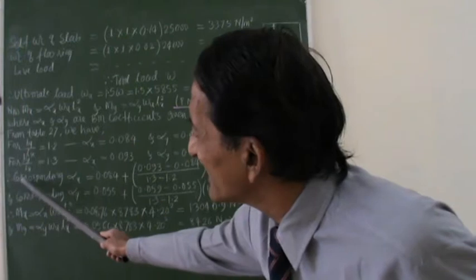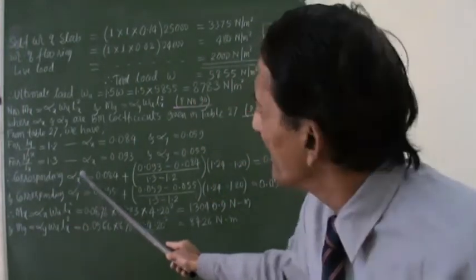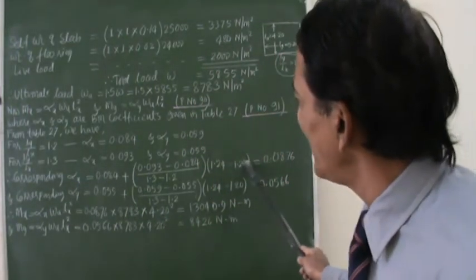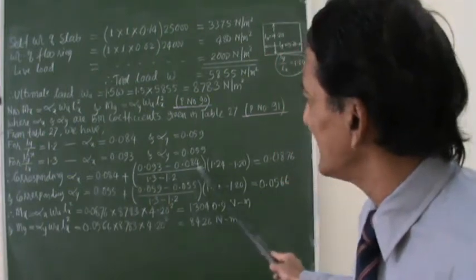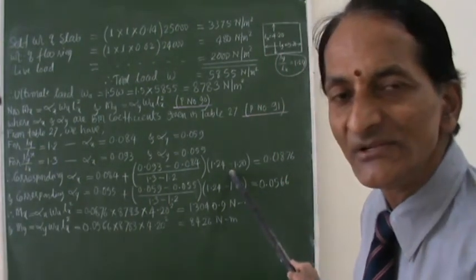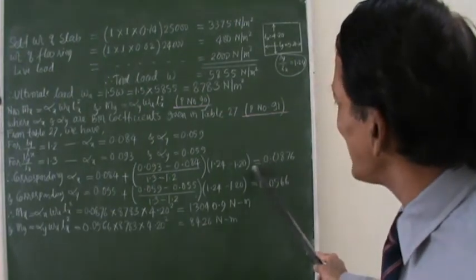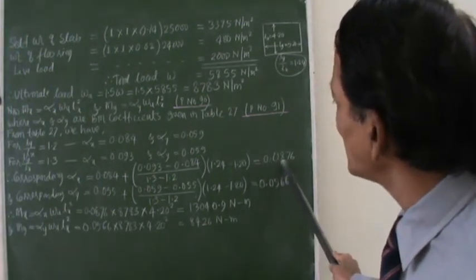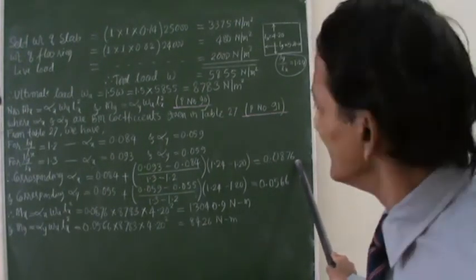So now I will try to calculate this corresponding alpha X by interpolation. Interpolation can be now done like this. You can just check it afterwards. And you will get alpha X value as 0.0876.